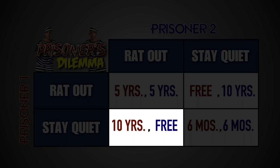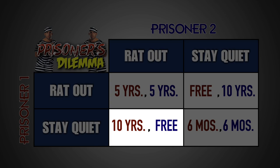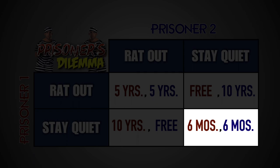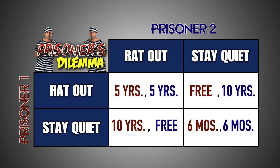If Prisoner 1 stays quiet and Prisoner 2 rats him out, Prisoner 1 goes to jail for 10 years, and Prisoner 2 goes free. If Prisoner 2 stays quiet and Prisoner 1 rats him out, Prisoner 2 goes to jail for 10 years, and Prisoner 1 goes free. And if both prisoners stay quiet, they both go to jail for 6 months.